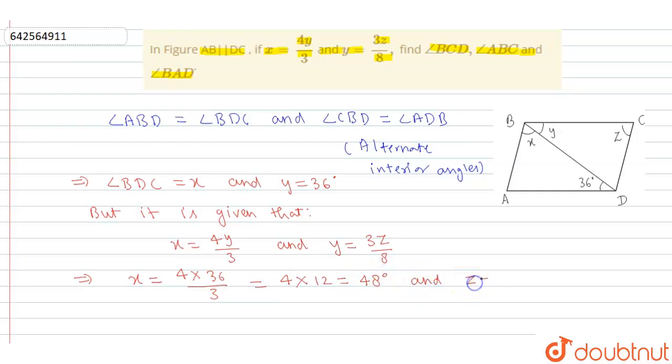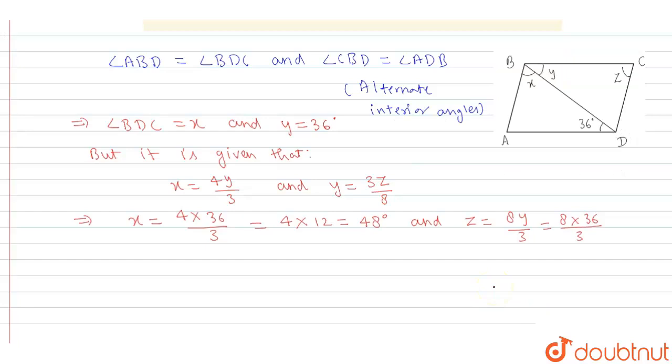And z is equal to 8y upon 3. So, after putting the value we get 8 multiply 36 upon 3. Okay, after solving, we get z is equal to 8 multiply 12, or we can write 96 degrees.